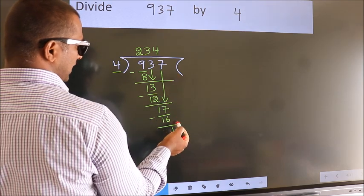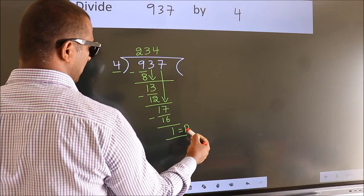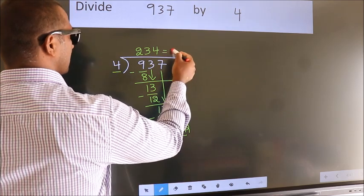No more numbers to bring it down. So, we stop here. This is our remainder. This is our quotient.